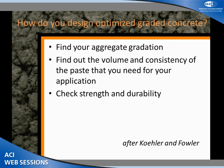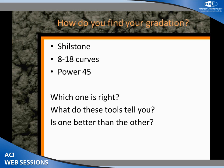So how do you design optimized graded concrete? There are three main steps. You've got to find your aggregate gradation. You have to find the volume and the consistency of your paste — not all concrete mixtures need the same amount or consistency. A paving mixture can get away with very low paste content, but a bridge deck needs much more flowable paste. You have to tune your mix to the application. And finally, we check strength and check durability.